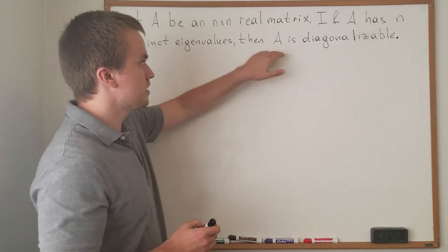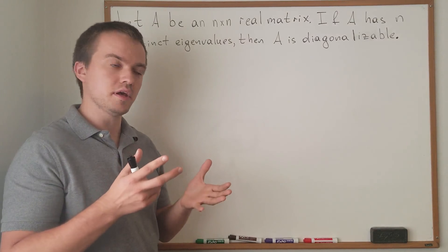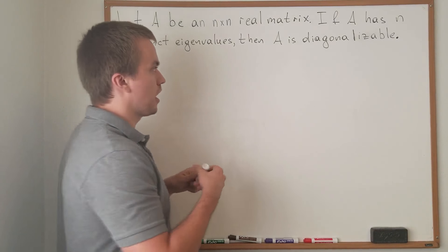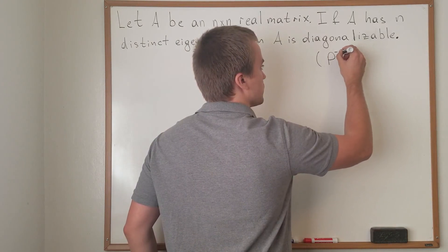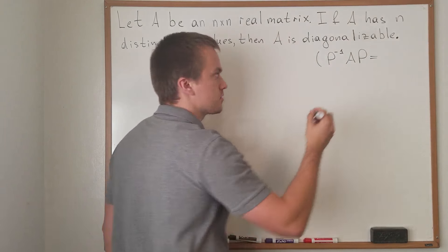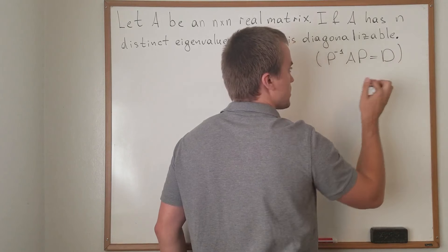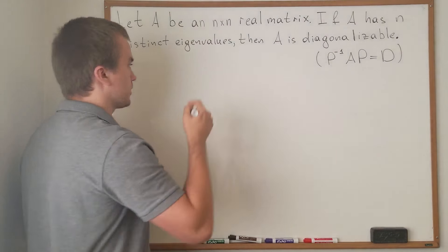What does it mean that A is diagonalizable? It means I can find such an invertible matrix P where if I'm going to multiply P inverse A P, then the resulting matrix is going to be diagonal. And actually I'm going to prove this formula, so let's start our proof.